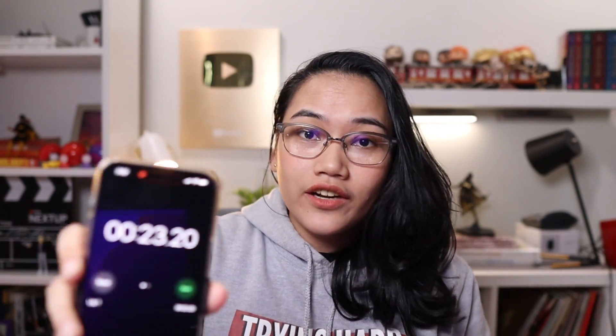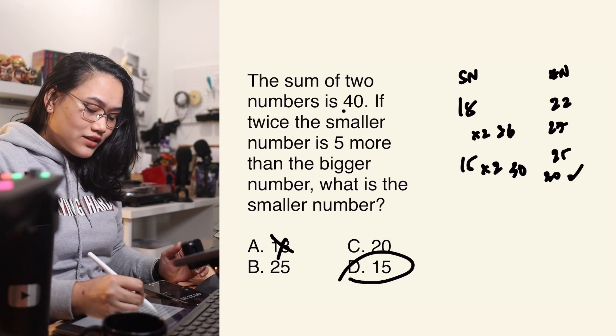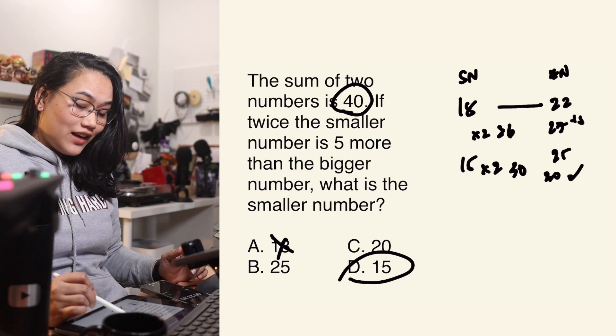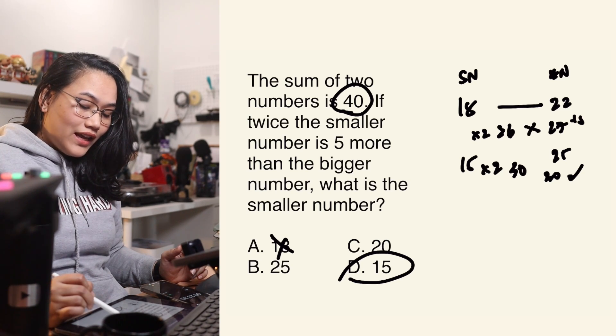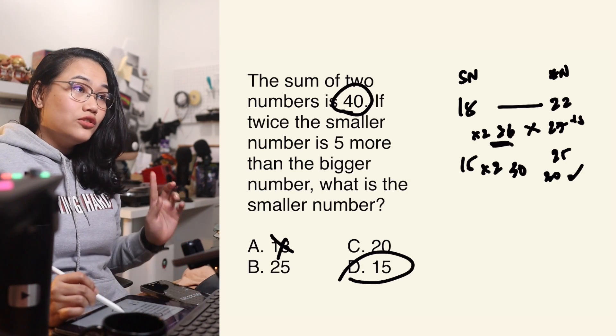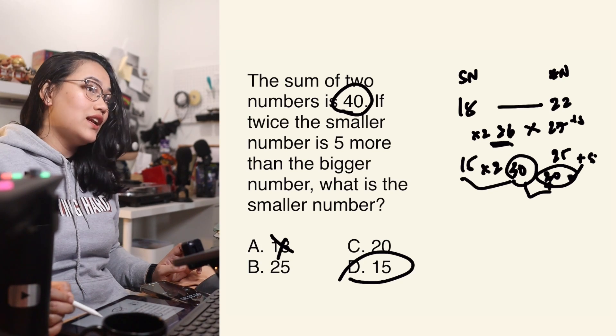Using trial and error, I answered the question in 23 seconds. But trial and error relies on you knowing how to check if an answer is correct. What I did was look for the paired bigger number — since the sum is 40, the pair of 18 is 22. I added 5 to get 27, then multiplied 18 by 2 — they weren't equal. Since the smaller number side was higher, I tried 15 next. Multiplied 15 by 2 to get 30, then added 5 to 25 to also get 30 — they're equal, so 15 is the answer. If you don't understand this part, that's where solving using an equation comes in — or you skip it, or guess.